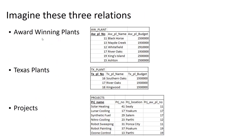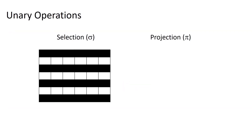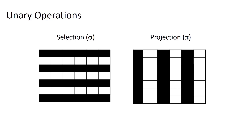For the upcoming examples, let's imagine we have three relations: AW Plant — plants that are award-winning; Texas Plants — plants that are in Texas; and Projects — projects that might be undertaken by plants. We'll start by looking at our two unary operations: selection, which returns a subset of tuples based on some criteria, and projection, which returns a subset of attributes whose values we're interested in seeing.